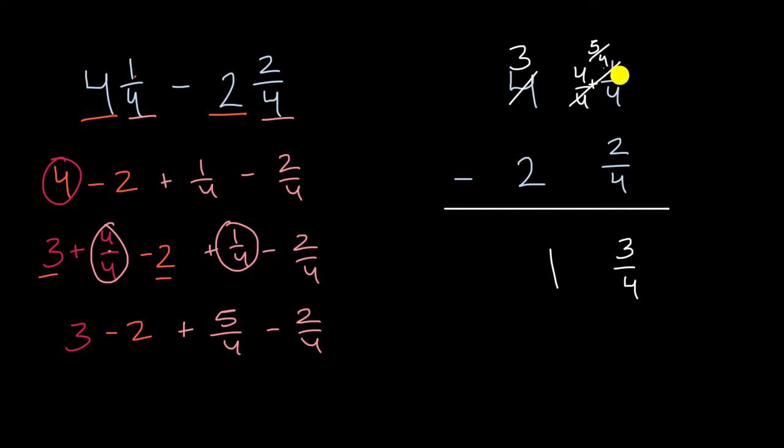Three and five-fourths minus two and two-fourths. And so three minus two is one. Five-fourths minus two-fourths is three-fourths.